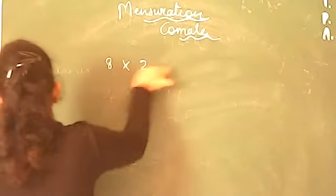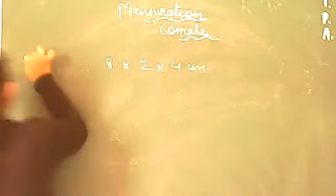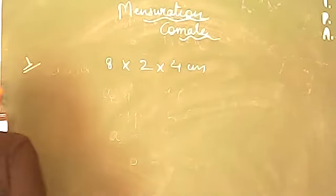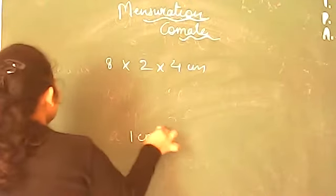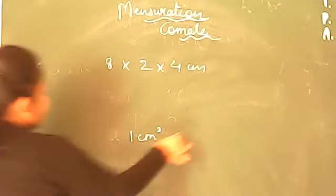Question number one says that a solid cuboidal piece of iron measures 8 × 2 × 4 centimeters. Find its weight if one centimeter cube of iron weighs 12 grams.